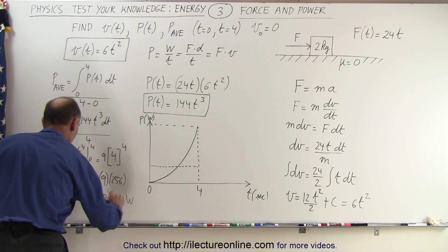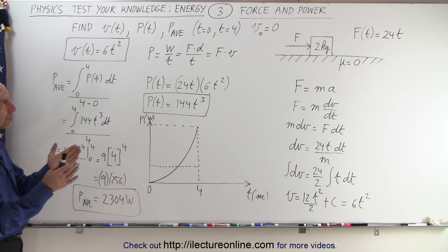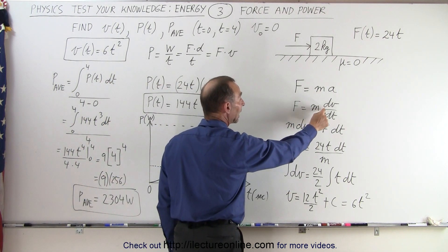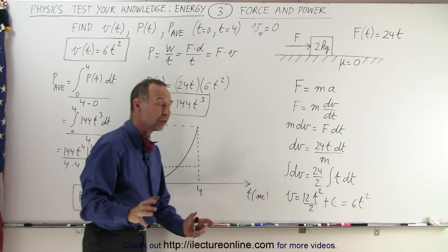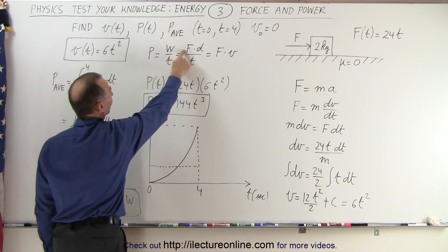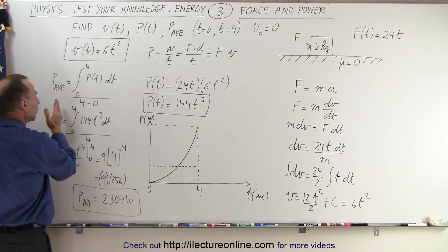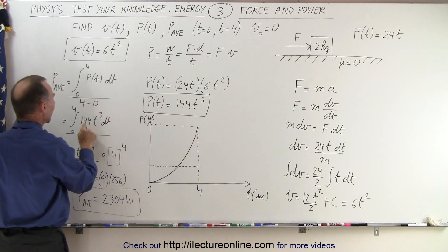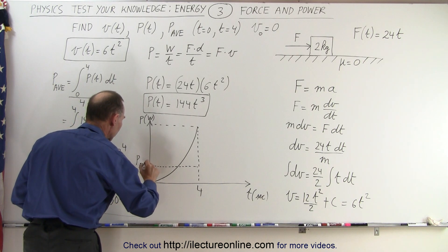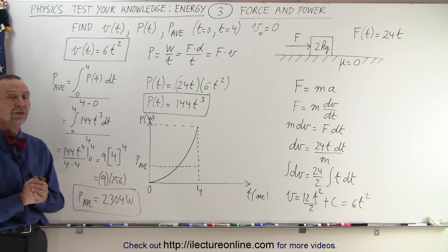So 2304 watts is the average power over the first four seconds. To recap: we started with a 2-kilogram object pushed by a variable force of 24t. We used F equals MA, writing acceleration as dV/dt, and solved through integration to get V equals 6t squared. Then instantaneous power — force times velocity — gave us 144t cubed. Finally, integrating 144t cubed from zero to four and dividing by four gives the average power of 2304 watts.